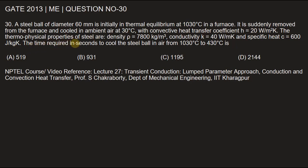The thermophysical properties of steel are: density ρ = 7800 kilogram per meter cube, conductivity k = 40 watt per meter Kelvin, and specific heat C = 600 joule per kilogram Kelvin. The time required in seconds to cool the steel ball in air from 1030 degrees Celsius to 430 degrees Celsius is asked.